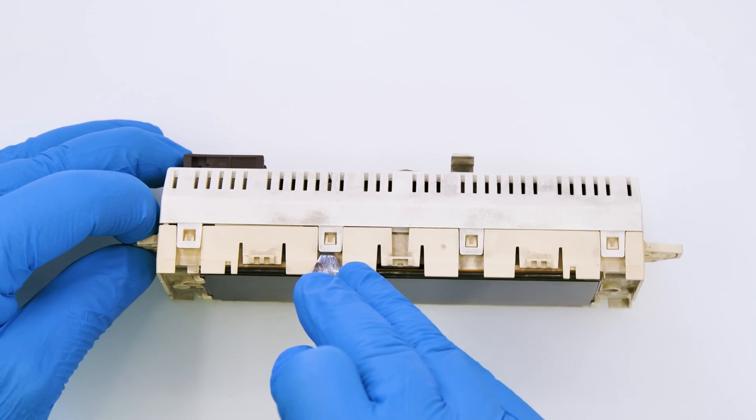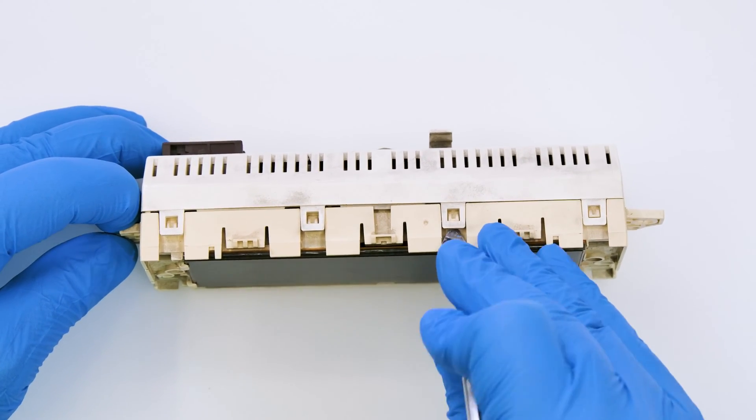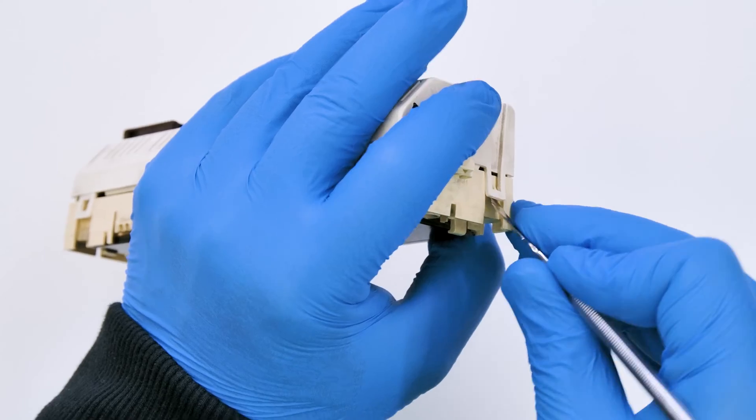Position the module as shown and with the head of the spudger leverage on the plastic clips to remove the rear cover.